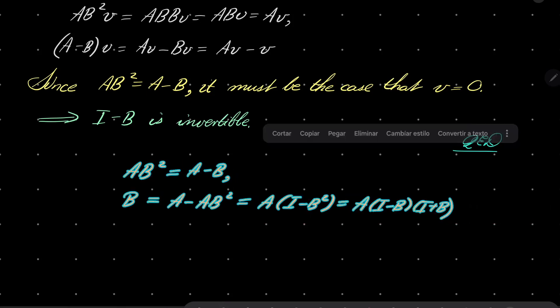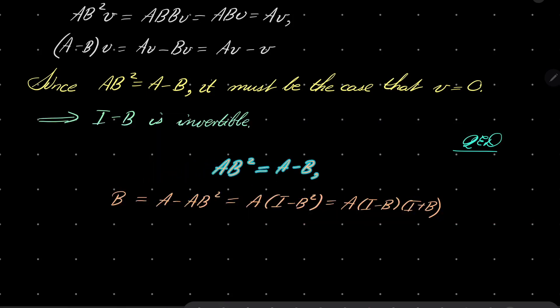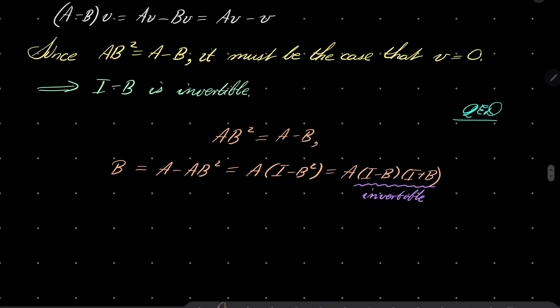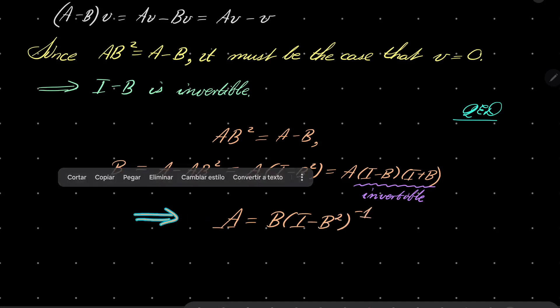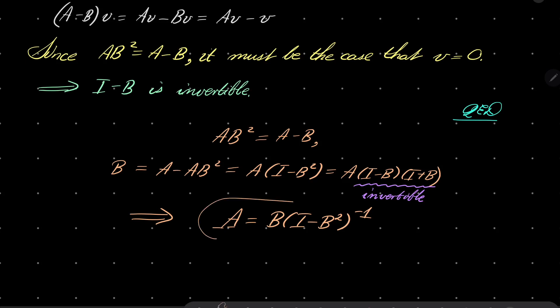Let me put it left. But now notice that we have demonstrated that these two matrices are invertible. Product of two invertible matrices is again invertible. It's invertible. So we can write, we can multiply on the right side by the inverse of this matrix. And we see that A equals B, the identity matrix minus B squared inverse. And let's remember that. We will use it.